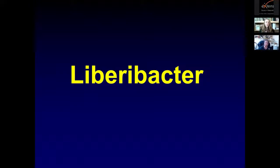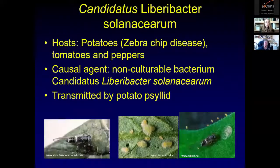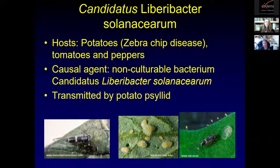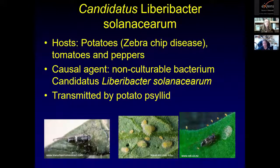We'll start with Liberibacter, a pathogen detected for the first time in Utah in 2013. It occurs in all surrounding states. It is a non-culturable bacterium, so it can't be isolated on artificial medium — it has to be done through molecular testing. It causes diseases on potatoes, tomatoes, and peppers, and we do see it on all three in Utah. In general it's most important on potatoes, where it causes zebra chip disease. It is transmitted by potato psyllids.